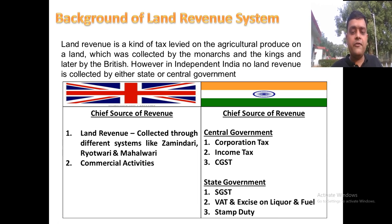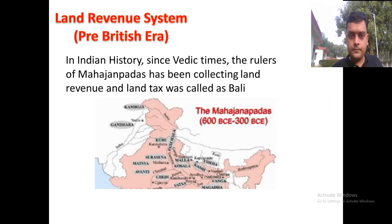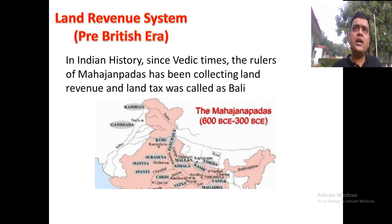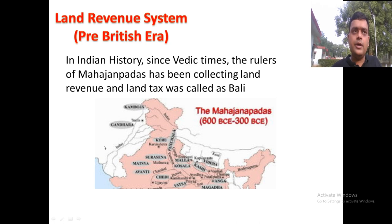The chief source of revenue for the central government today is corporation tax, income tax, and CGST; for state governments it is SGST, VAT, excise on liquor and fuel, and stamp duties. Before the British era, from Vedic times, kings of the Mahajanapadas used to levy land tax called 'Bali,' which was one of the chief sources of revenue — so land taxation is not a new concept.